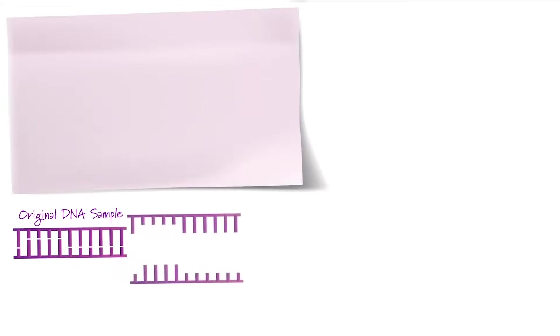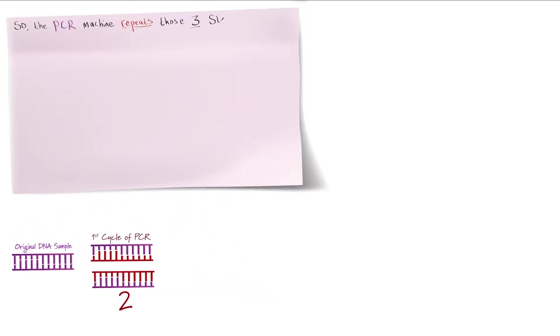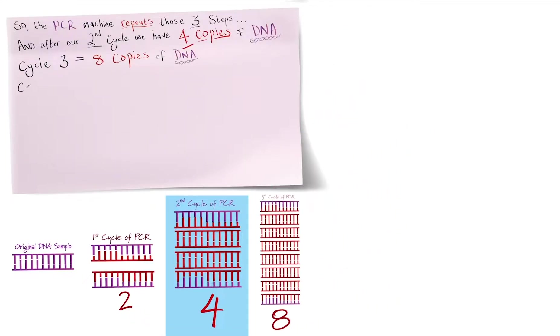So by the end of this first cycle our original DNA sample has been copied so now we have two. So now the PCR machine repeats those three steps and after our second cycle we'll have four copies of DNA. Cycle three will equal eight copies of DNA.